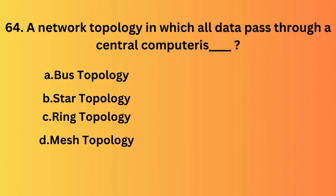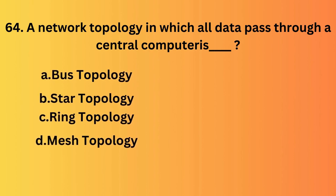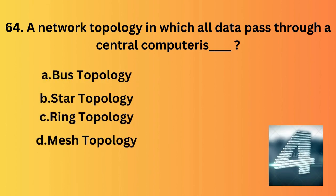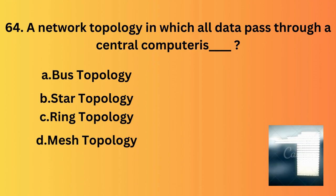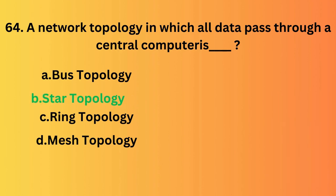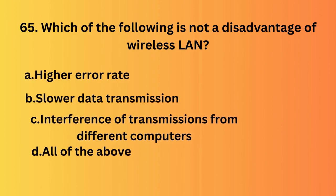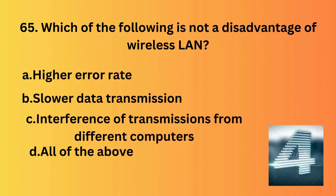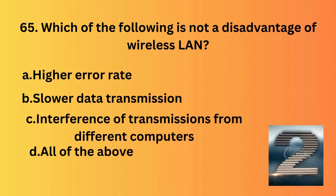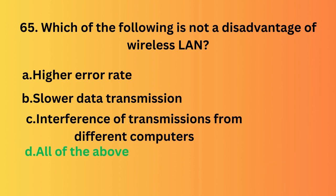A network topology in which all data pass through a central computer is — the answer is star topology. Which of the following is not a disadvantage of wireless LAN? The answer is all of the above.